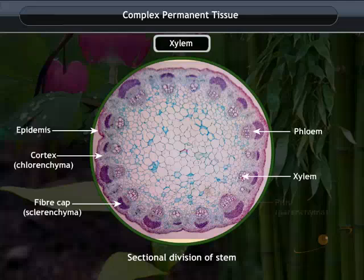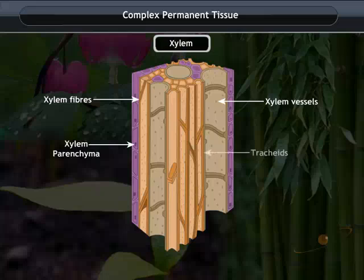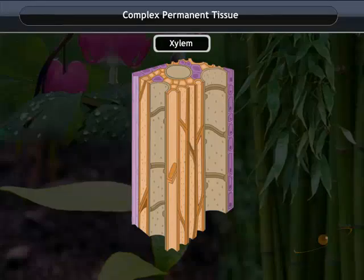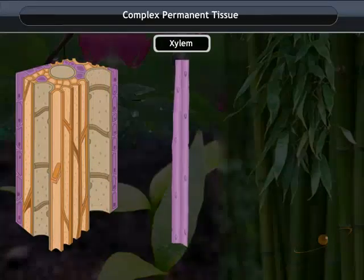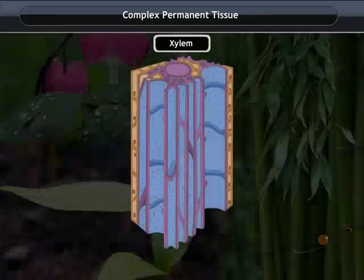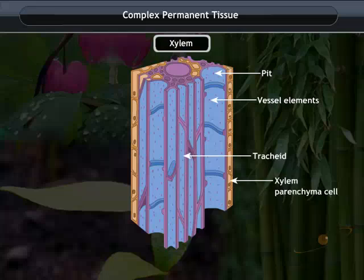Xylem consists of xylem parenchyma, xylem fibers, vessels, and tracheids. Except xylem parenchyma, all other elements are dead cells and have thick lignified walls. The parenchyma stores food and helps in the sideways conduction of water. These dead cells are arranged one on top of the other, forming a continuous tube.